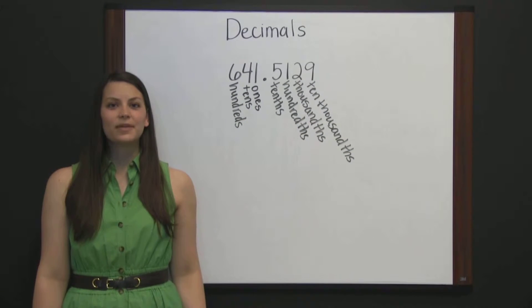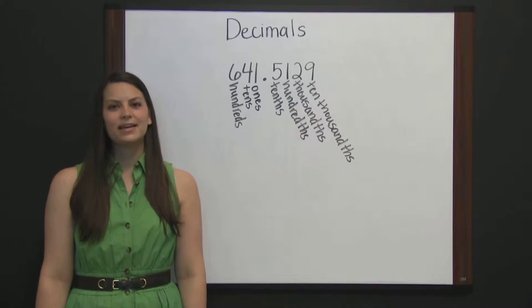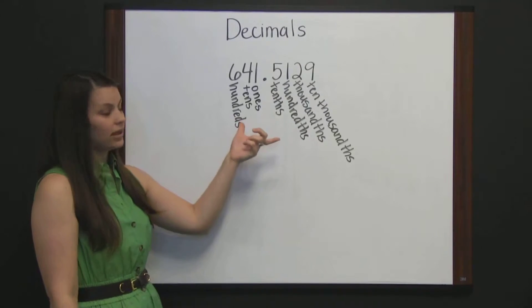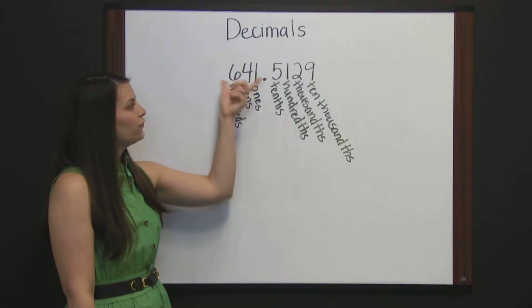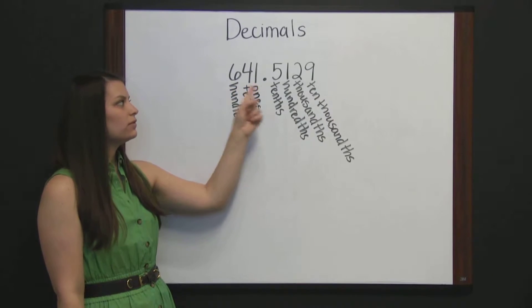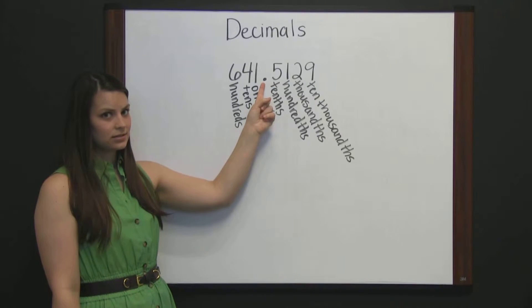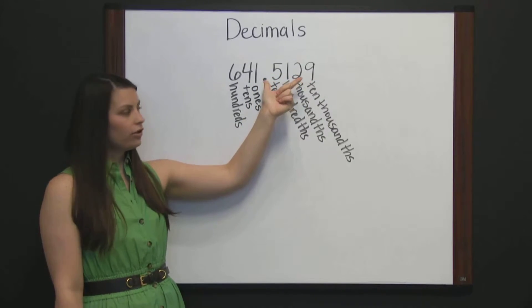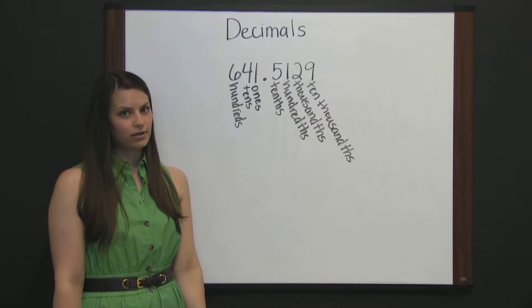Decimals. Decimals use place value to represent an amount. To read a decimal like we have here, first read the number to the left as a whole number, followed by and, then read the number to the right of the decimal, followed by the last place value.